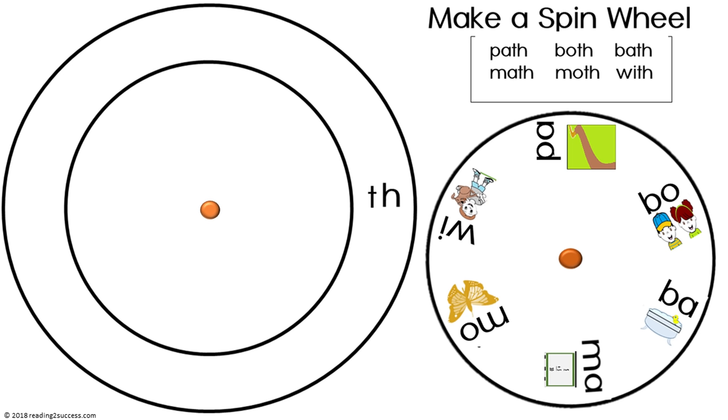And now this is the template for the make-a-spin wheel. The words will be path, math, both, moth, bath, and with, all words end in TH. And cut out the two circles, place a small circle on top, and place a brad where the little circle is. And then you have a spin wheel to make the different words.